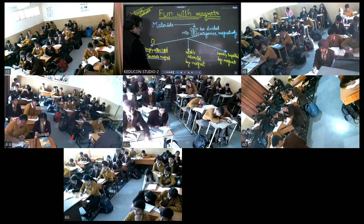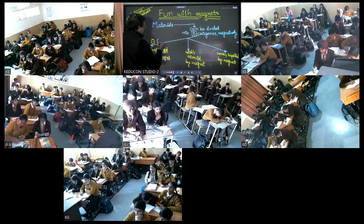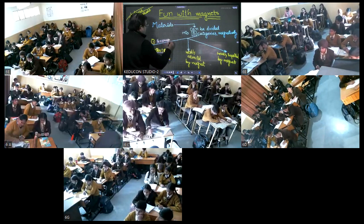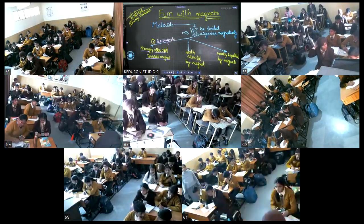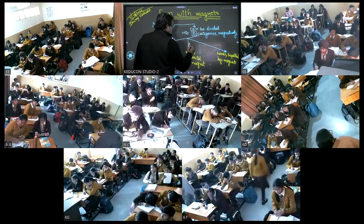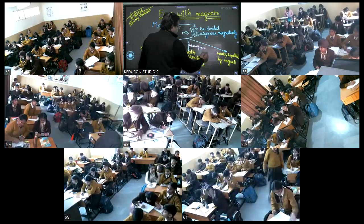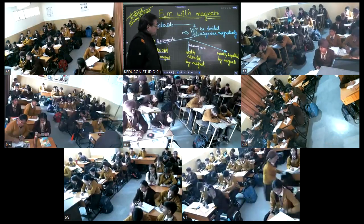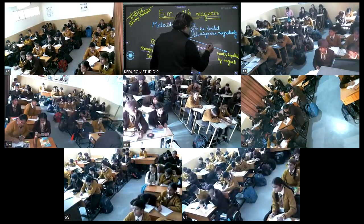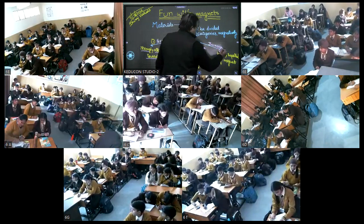जो चुम्बक के पास आते ही चुम्बक से चिपक जाते हैं, उनको बोलते हैं Ferromagnetic। और जो थोड़े बहुत attract होते हैं, उनको बोलते हैं Paramagnetic। और जो थोड़े बहुत repel होते हैं, उसको बोलते हैं Diamagnetic।